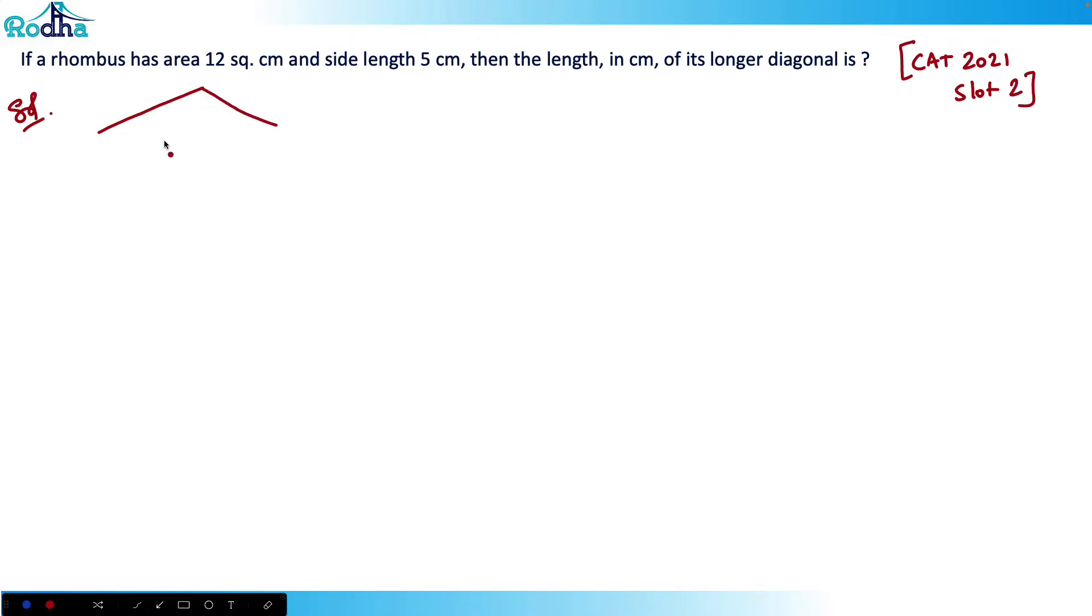Let's make a rhombus here. I know that the diagonals bisect each other. This is A and this is B and B. That means the length of one diagonal is 2A and the length of the other diagonal is 2B.